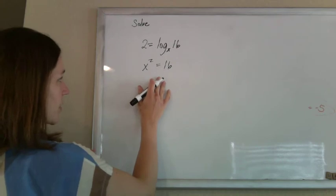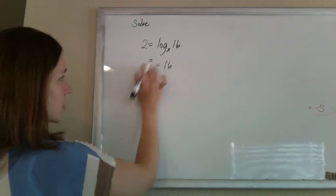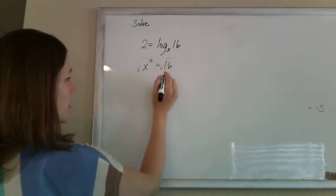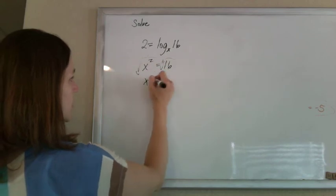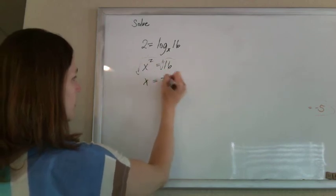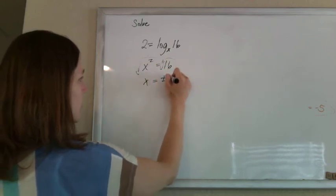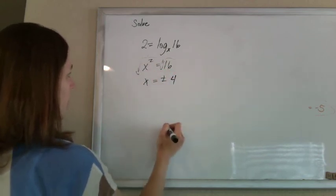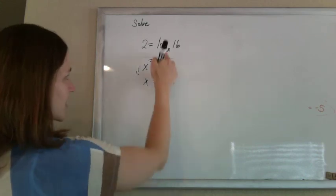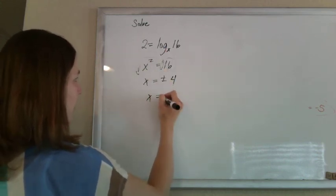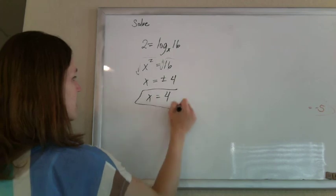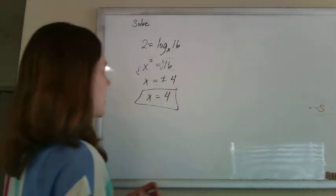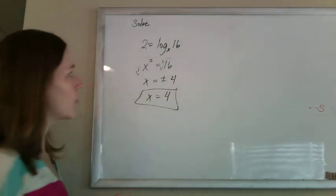Solve this however we can. To undo squaring, we're going to square root both sides. Remember, you give it a half — a fancy half — so x would be plus or minus 4. But since it's a log, we don't normally have negative bases. So we'll just ditch the negative answer and say that x is 4.